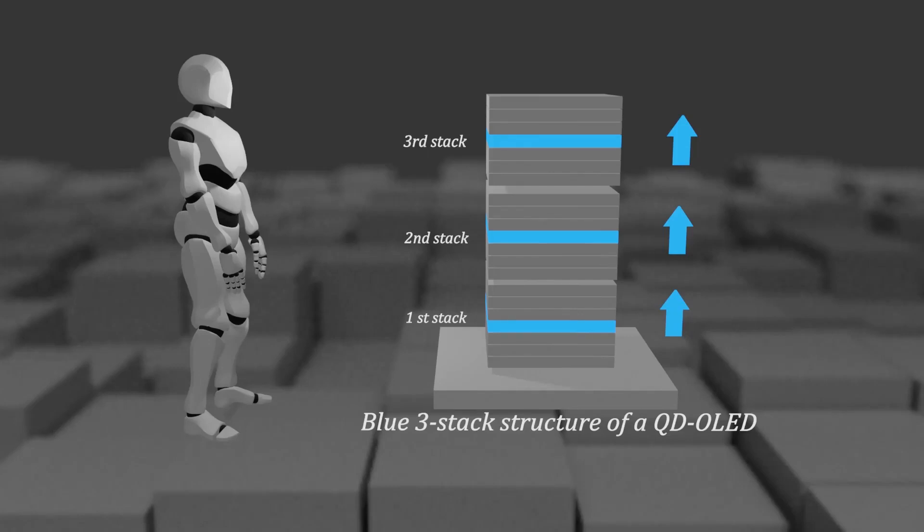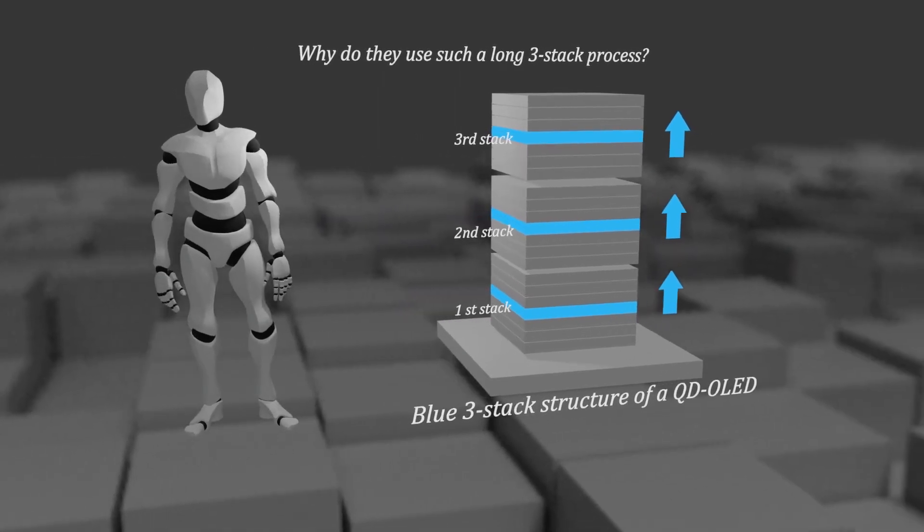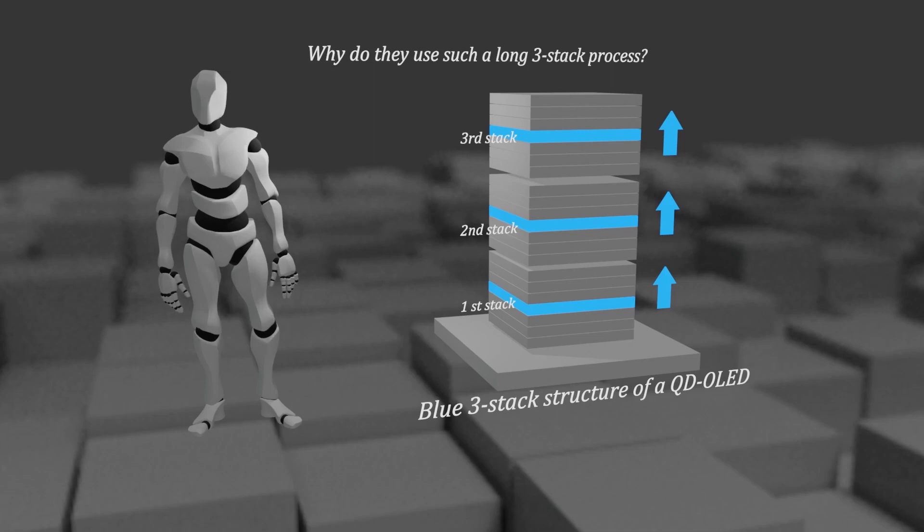Now, let's think about it together. When Samsung manufactures QD-OLED, it uses deposition type blue OLED, and its structure consists of 3-stack blue elements. So, why does Samsung use 3-stack per QD-OLED, which requires such a long process? Although the panel can be completed even with one layer of blue OLED and quantum dots formed on it.